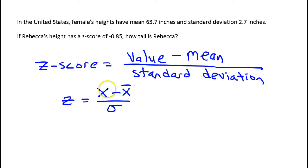Now we are given three out of four variables, and we're being asked to find the fourth one. The mean is 63.7, so in this formula, that would go right here, minus 63.7 inches. The standard deviation is 2.7. That goes right here in the denominator, so 2.7 inches.